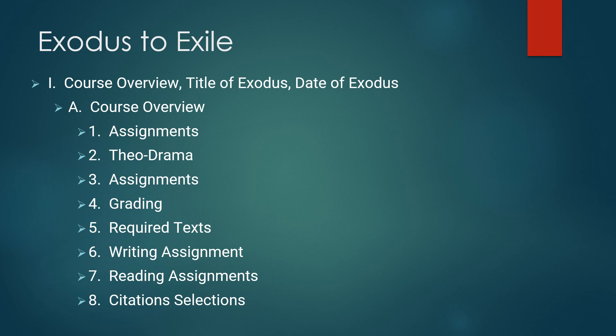The two extra credit books are by Tremper Longman: Making Sense of the Old Testament: Three Crucial Questions, and Emmanuel in Our Place: Seeing Christ in Israel's Worship. You can raise your final grade by five-tenths of a grade point for an A on your report, four-tenths for a B, three-tenths for a C, and no points for less than a C. If you read both books and get an A on your reports, you can raise your grade a full grade point.